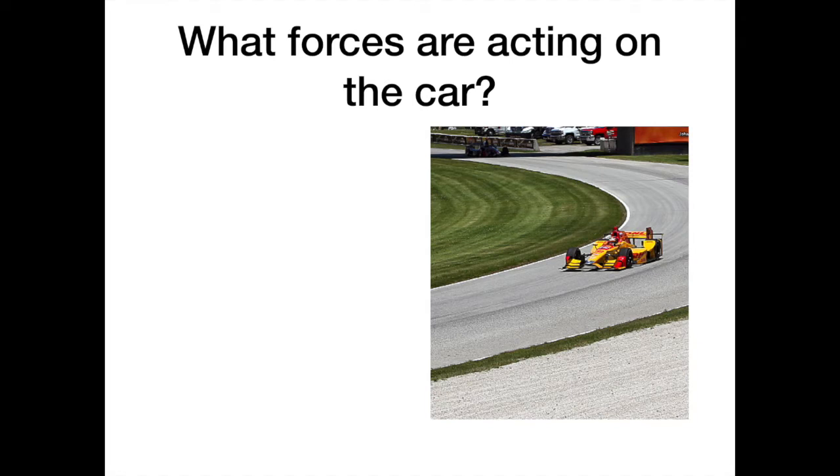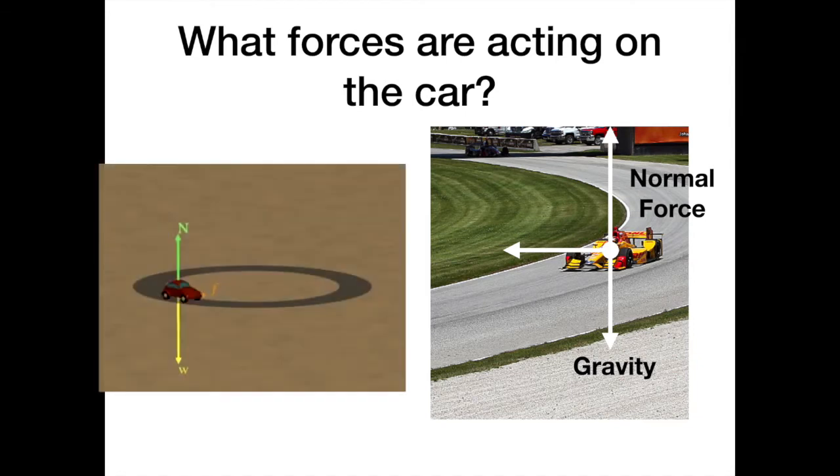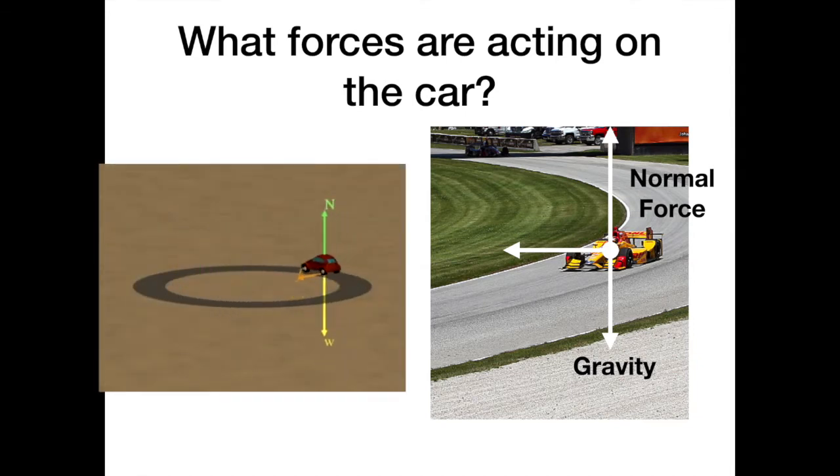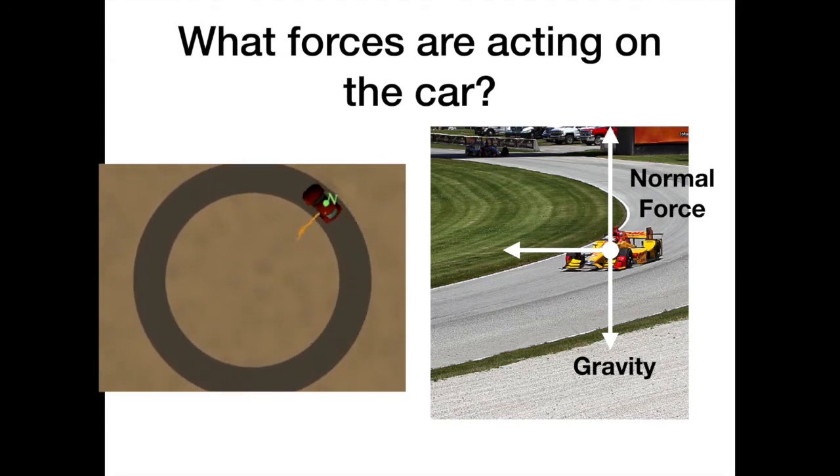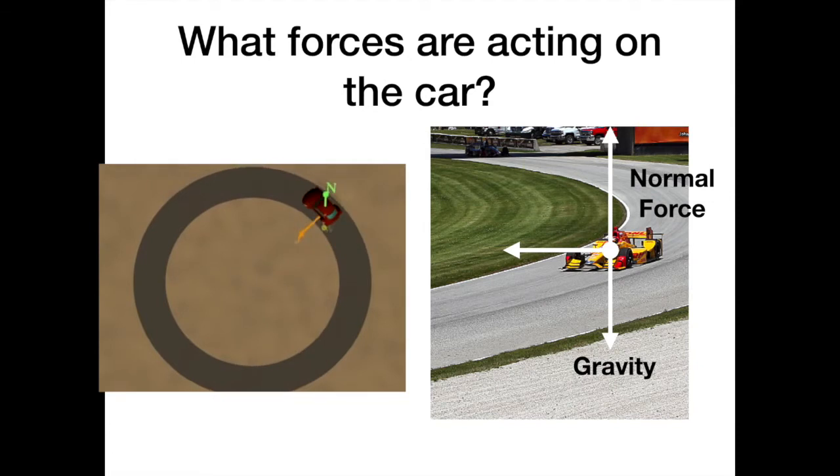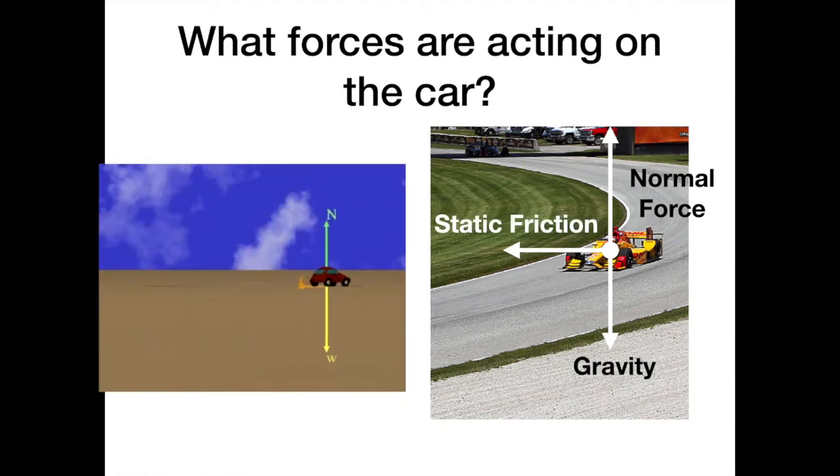So first let's take a look at what forces are acting on the car. We have in the downward direction we have gravity, as usual, and in the upward direction we have the normal force. So there must be a horizontal force pointing toward the center of the turn that acts as the centripetal force. And this force is a force of static friction.